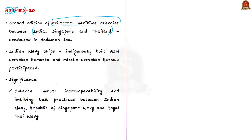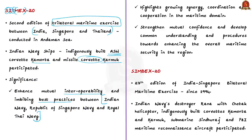The exercise saw participation of Indian Navy ships including the indigenously built anti-submarine warfare corvette Kamorta and missile corvette Karmuk. A corvette is a small warship designed for convoy escort duty. The Sitmex series is conducted to enhance mutual interoperability and for imbibing best practices between the Indian Navy, Republic of Singapore Navy and Royal Thai Navy. The first edition was in 2019, hosted by Indian Navy; now it is hosted by Republic of Singapore Navy. Due to COVID-19, Sitmex 20 was conducted as a non-contact, at-sea-only exercise, including naval maneuvering, surface warfare exercises and weapon firings. This exercise highlights the growing synergy, coordination and cooperation in the maritime domain between the three friendly navies.